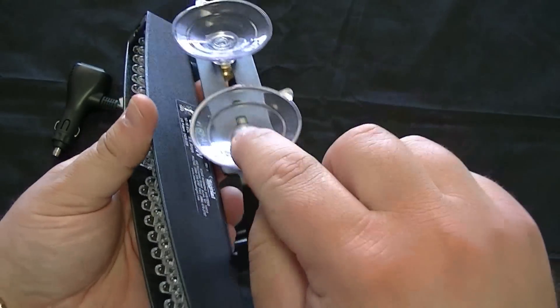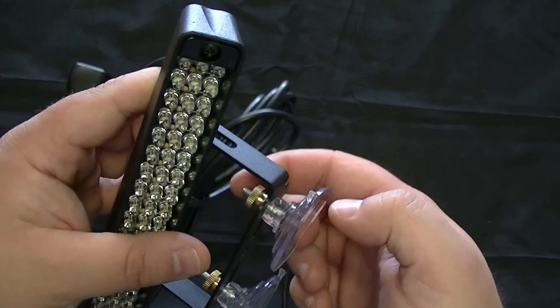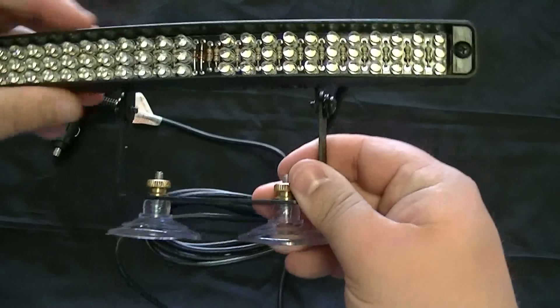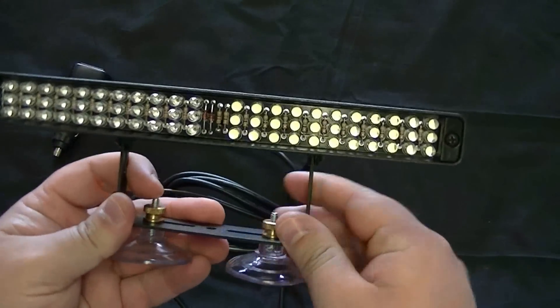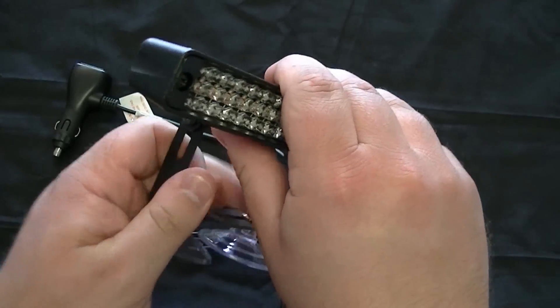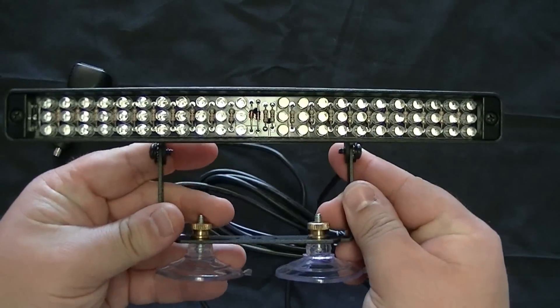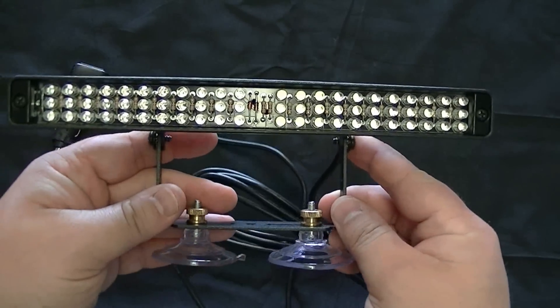Another thing you can do is take off the suction cups, which just simply unscrew. And then you can mount it like this in the rear deck of your vehicle. Maybe one on either side of your third brake light.